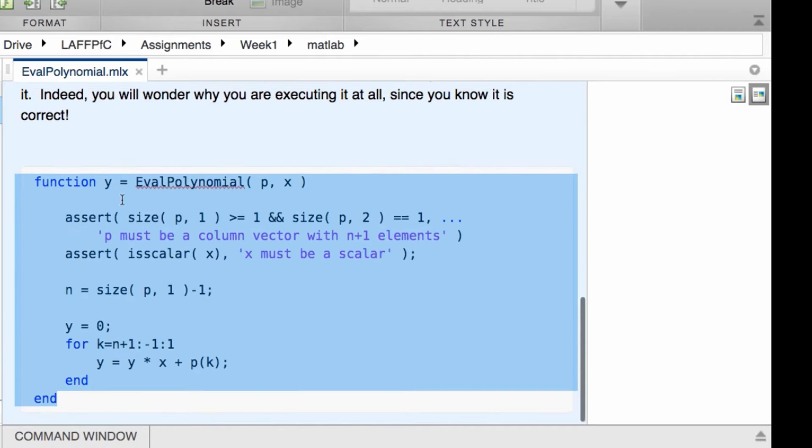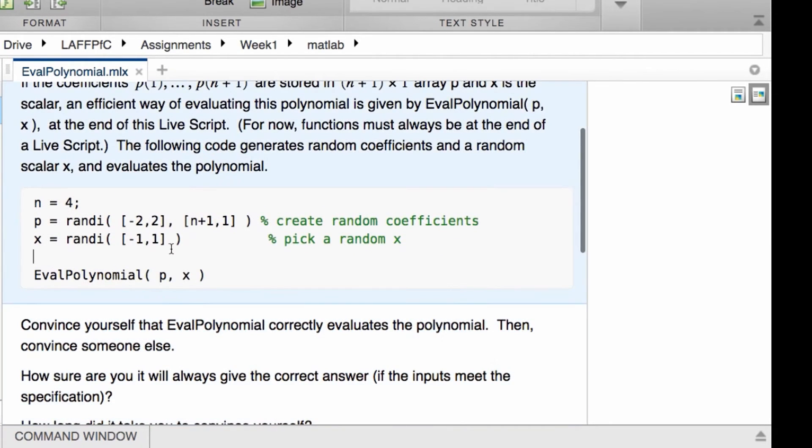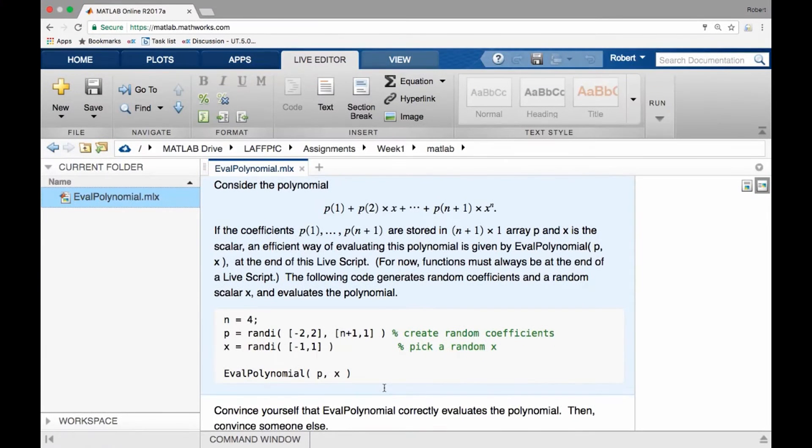And you can go back to this particular box. You can execute the code that's in it by going up to run and then saying run all. And that then executes all executable boxes in this LiveScript. And the result is on the right. So it shows what the randomly generated coefficients are that were stored in p.